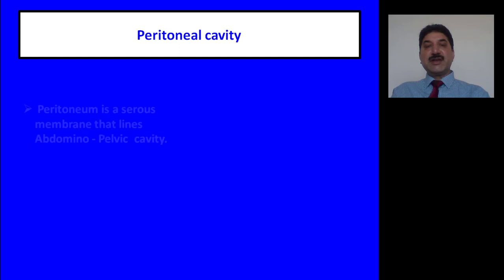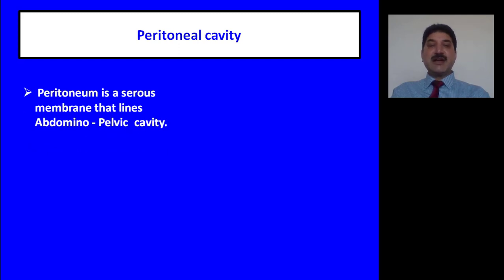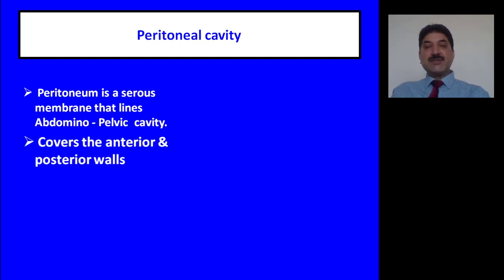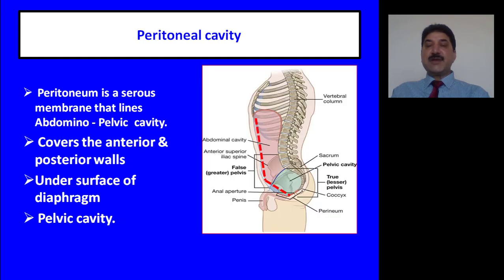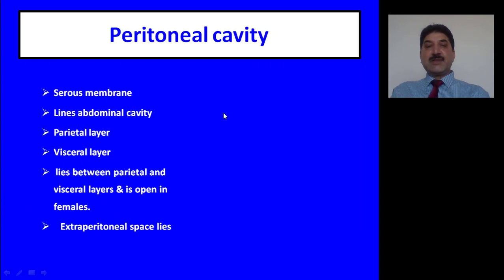Now, what is the peritoneal cavity? Peritoneum is a serous membrane that lines the abdominal pelvic cavity. It covers the anterior and posterior abdominal walls and also the surface of the diaphragm and the floor of the pelvic cavity. As shown in this diagram, the red dotted line represents the parietal peritoneum, which lines the anterior abdominal wall, posterior abdominal wall, undersurface of the diaphragm, and pelvic floor. Peritoneum has two layers: parietal layer and visceral layer.